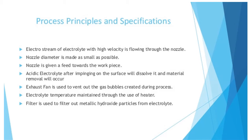An electro stream of electrolyte with high velocity flows through the nozzle. The nozzle diameter is made as small as possible. The nozzle is given a feed towards the workpiece. The acidic electrolyte, after impinging on the surface, dissolves it and material removal occurs. An exhaust fan is used to vent out the gas bubbles created during the process.